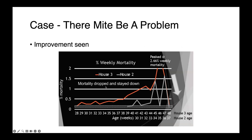Here is an extension of the same figure showing weekly mortality rates. The mortality in house 3 peaked at over 2% on a weekly basis, and house 2 over 1.5%. With application of this new drug, mortality rates dove back into the normal range.